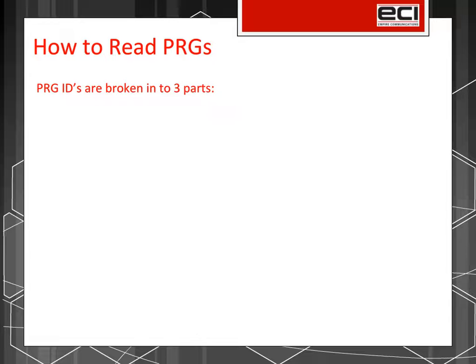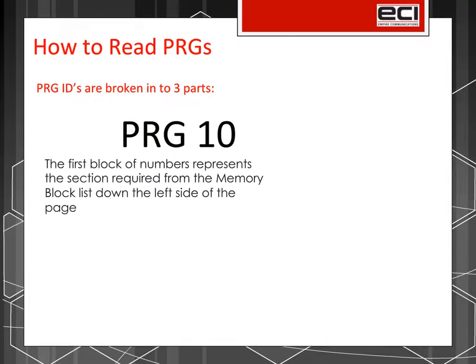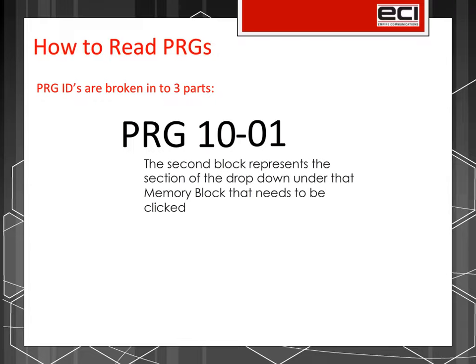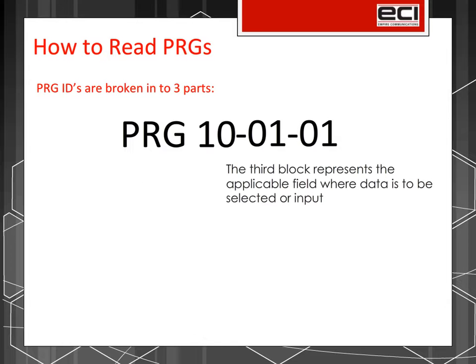Program IDs, also known as PRG IDs, are broken into three parts. The first block of numbers represents the section required from the Memory Block list down the left side of the page. The second block represents the section of the drop-down under the Memory Block that needs to be clicked, and the third block represents the applicable field where data is to be selected or input.